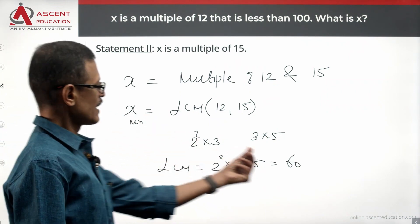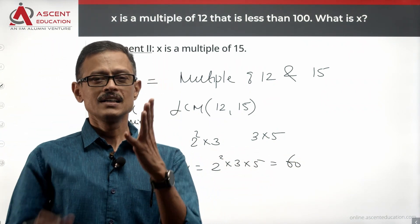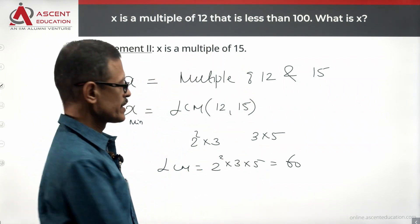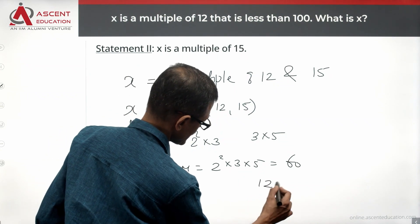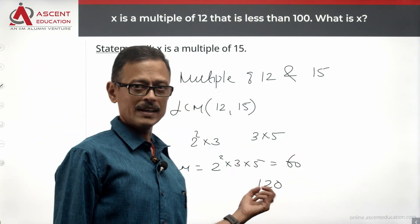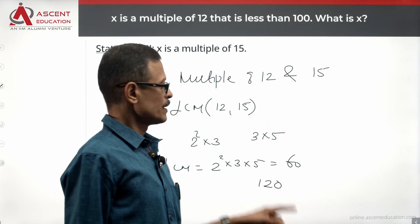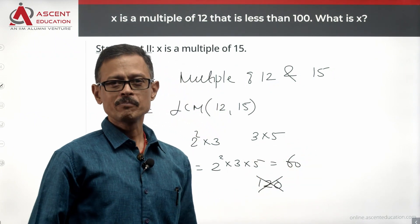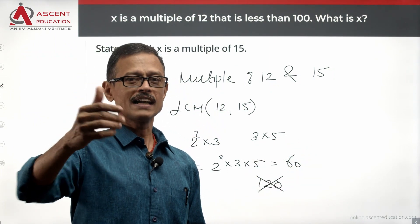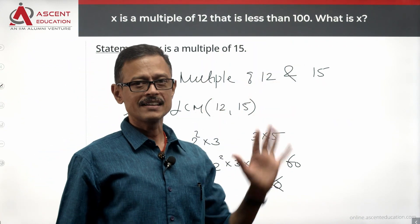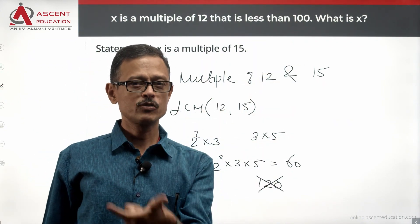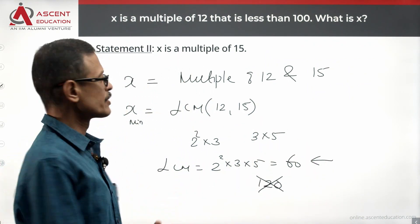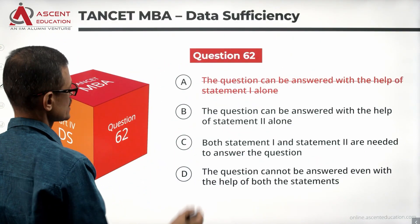So X would have least value 60. 60 is the smallest number that is both a multiple of 12 and a multiple of 15. What are the next values that satisfy both conditions? The next multiple of 60 is 120. But is it less than 100? No. Any multiple of 60 other than 60 will always be greater than 100. So we need less than 100, multiple of 12, multiple of 15. What number? One number, which is essentially 60. We found it using statement 2 alone. Statement 2 alone is sufficient.